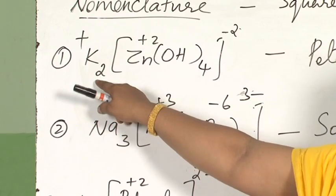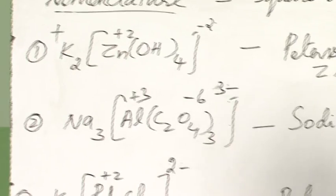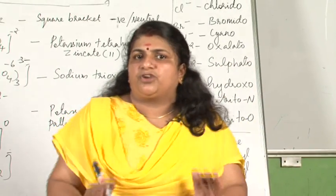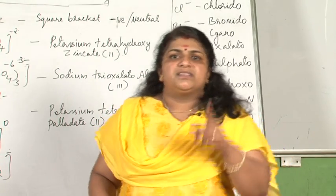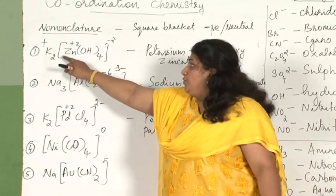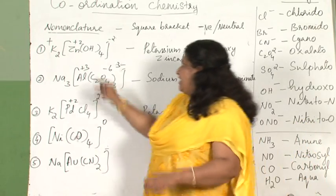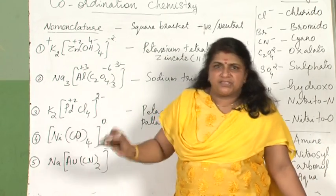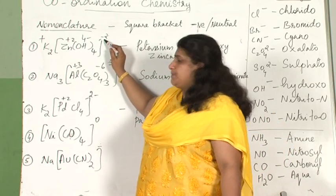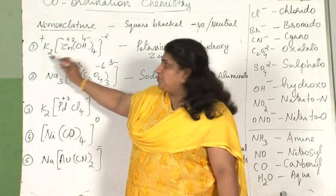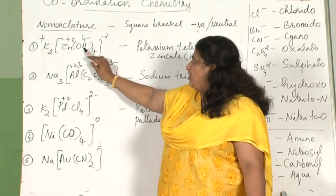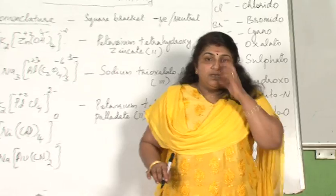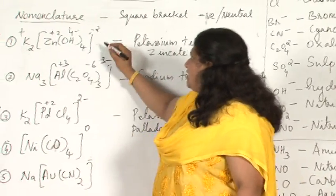The first step is to identify the oxidation state of the central metal ion. First identify whether the coordination entity is positive or negative; then find the oxidation state. The whole complex has a charge of minus 2. OH has a charge of minus 1, and there are 4 OH⁻, so that is minus 4. Since total charge is minus 2, zinc must be plus 2. The oxidation state of the central metal ion is plus 2.